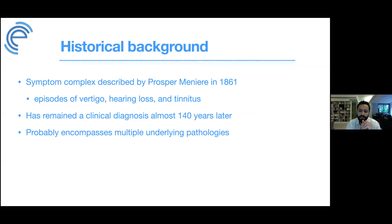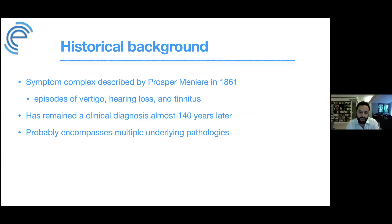What's interesting is that when Dr. Menière described that symptom complex, he was actually trying to prove that vertigo episodes are due to inner ear problems, not brain issues as was thought at the time. His reports of patients with vertigo and hearing loss were meant to prove it was an inner ear issue. In retrospect, some of his patients likely had intralabyrinthine hemorrhage rather than what we today call Meniere's disease.